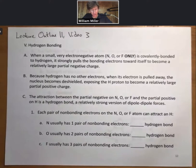Because hydrogen has no other electrons, when its electron is pulled away, the nucleus becomes deshielded, exposing the hydrogen proton to become a relatively large partial positive charge. The attraction between these on different molecules is a very strong version of dipole-dipole forces that we call hydrogen bonding.